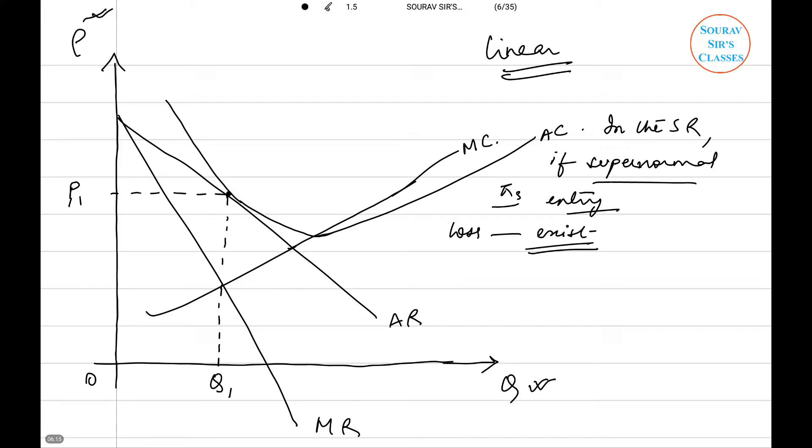What we find in the long run is that there will be normal profit prevailing if we want no entry or exit to take place. This can only happen when price is equal to the average cost, because if the price is greater than the average cost then there will be supernormal profit, and if it is less then there will be loss.